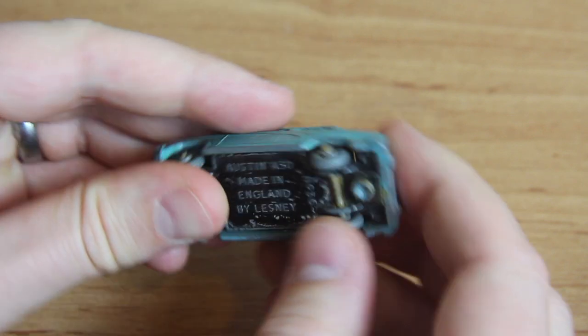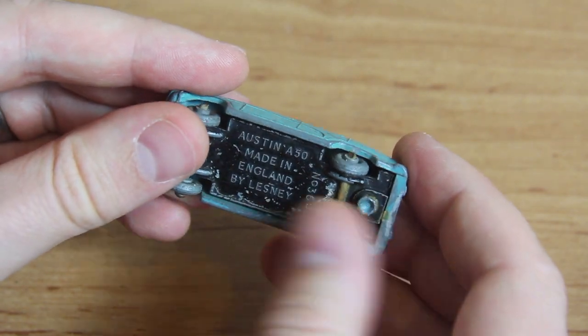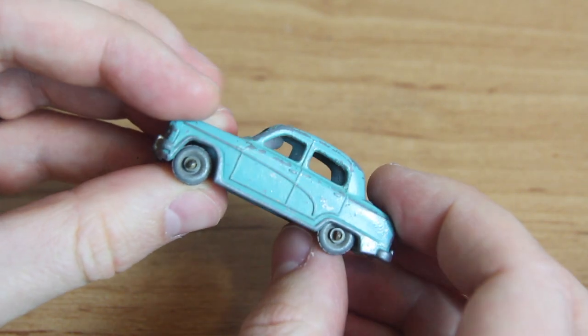Introduced in 1957, the A50 lasted until 1961 when it was replaced by the Lambretta scooter and sidecar.